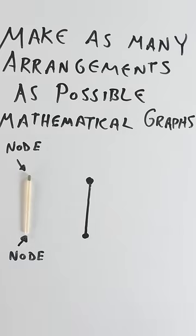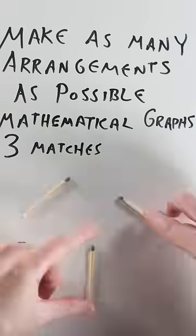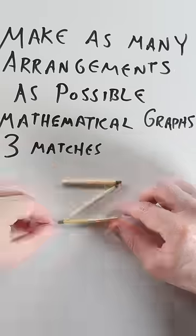So one match has one possible graph. Two matches also has one graph. With three matches you can do a Y, a triangle, or a Z shape.